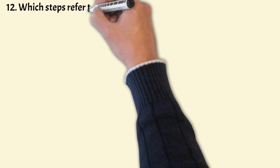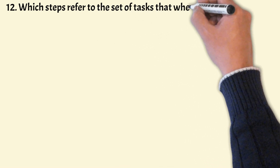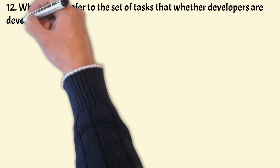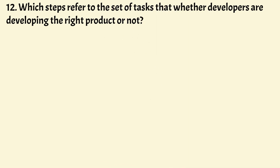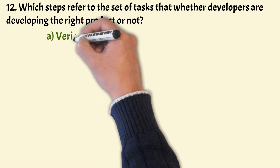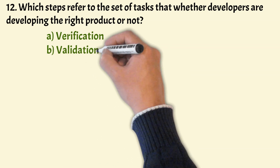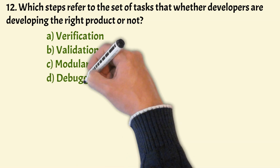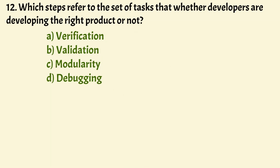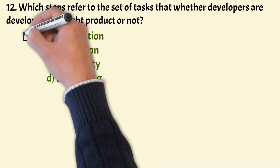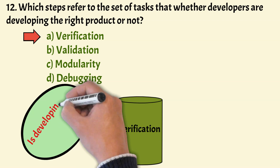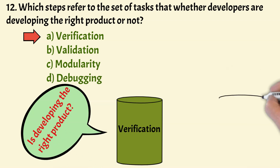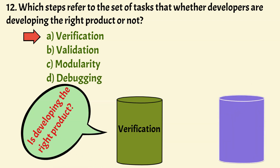Next question: Which step refers to the set of tasks that checks whether developers are developing the right product or not? The correct option is Option A, Verification. Verification includes checking whether developers are developing the right product or not, and is executed by the Quality Assurance team.